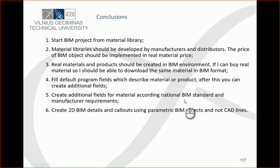In conclusion: start your BIM project from a material library. The material library should be developed by manufacturers and distributors. The price of BIM objects should be included in the real material price. Real materials and products should be created in BIM format — if you can buy a real material, you should be able to download the same material in BIM format. Fill default program fields describing the material or product, then create additional fields according to national BIM standards and manufacturer requirements. Create 2D BIM details and callouts using parametric BIM objects, not CAD lines.